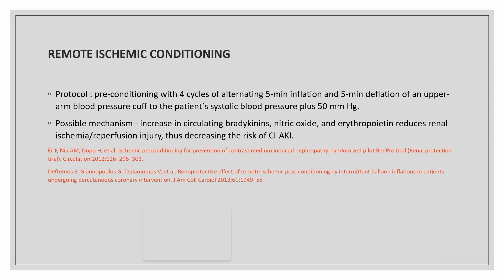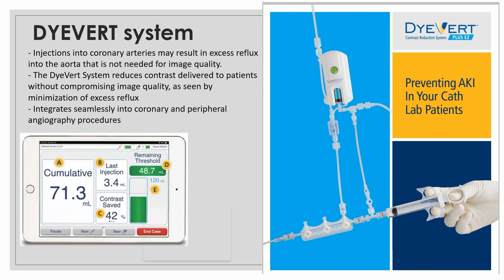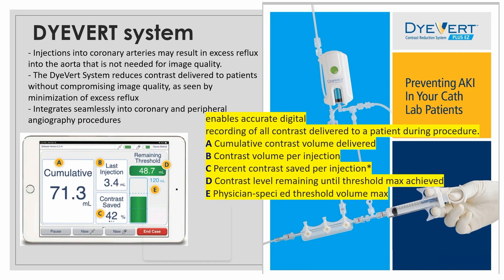Small data suggest remote ischemic preconditioning may be of benefit, with possible mechanisms including increased circulating bradykinin, nitric oxide, and erythropoietin. The Divert system reduces contrast delivered to the patient without decreasing image quality by minimizing excessive reflux into the aorta. It integrates into manifolds and provides data on total contrast volume delivered, contrast volume per injection, percentage contrast saved, and contrast remaining until a threshold maximum is reached. The company claims it consistently reduces contrast delivered by 40%.